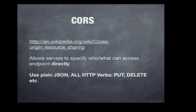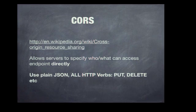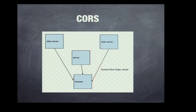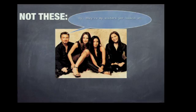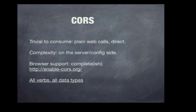So enter CORS — Cross-Origin Resource Sharing. It's been around for a little while. It allows you on the server side to specify who and what can access your endpoint, under what conditions, what headers, and all that. You can use plain old data like JSON and all the HTTP verbs — PUT, DELETE — the whole RESTful architecture. So now your diagram is just a single page app in the browser talking to an origin server and pulling in whatever data it needs, mashing it all up, because there's a header that says it's allowed to come in. It's trivial to consume.